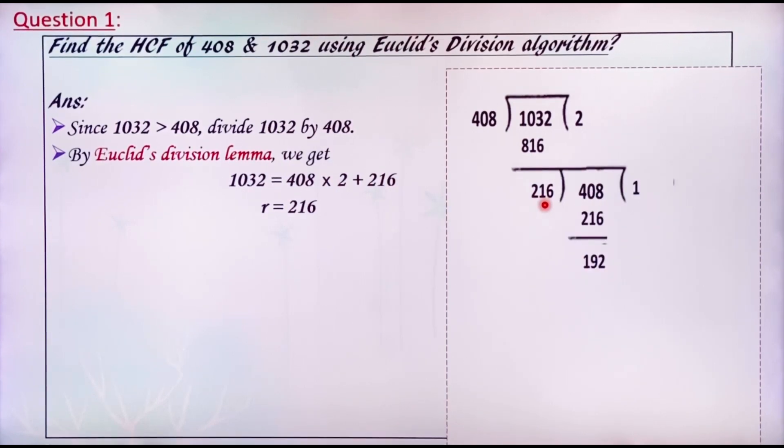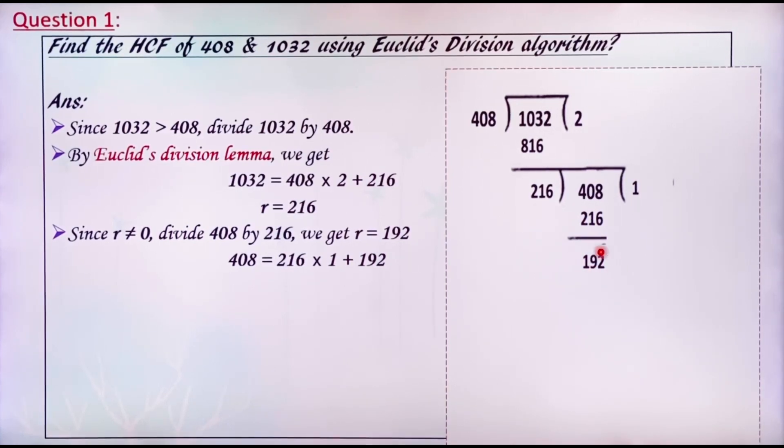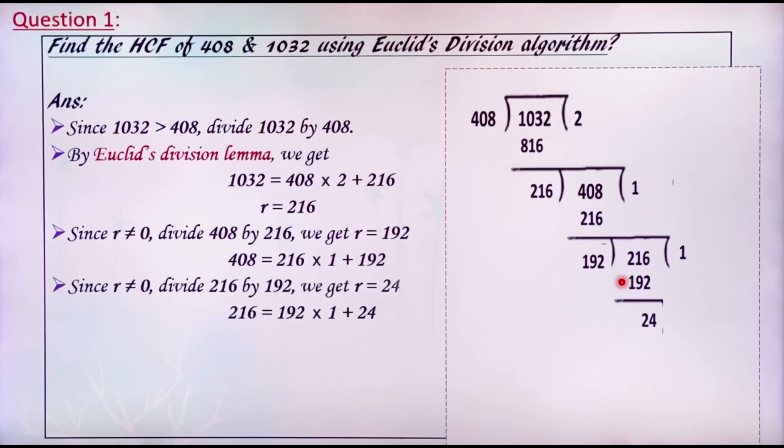Divide 408 by 216. We get 408 equals 216 into 1 plus 192. Here the remainder is again not equal to 0. Divide 216 by 192. We get 216 equals 192 into 1 plus 24.